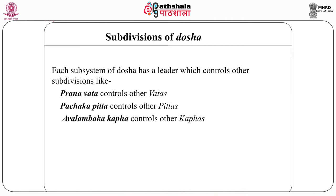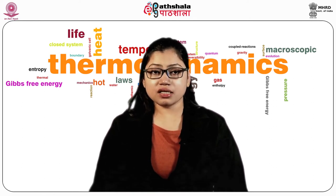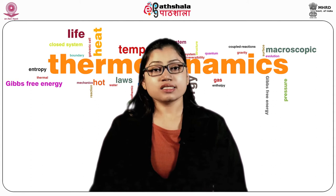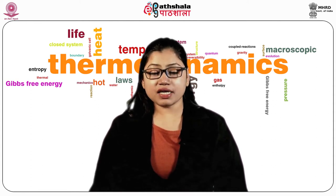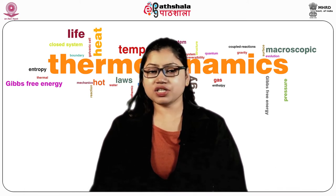There are three dosas and each of them has been divided into five subtypes. Each subsystem has a leader: Pranvata controls other vatas, Pachak Pitta controls other pittas, and Avalambak Kapha controls other kaphas. The five types of Vata and their functions are as follows. Pranvata is situated in the head and is responsible for controlling intellectual functions, cardiovascular functions, sense organs, psychological activities, respiration and reflex activities like sneezing, belching and deglutition.